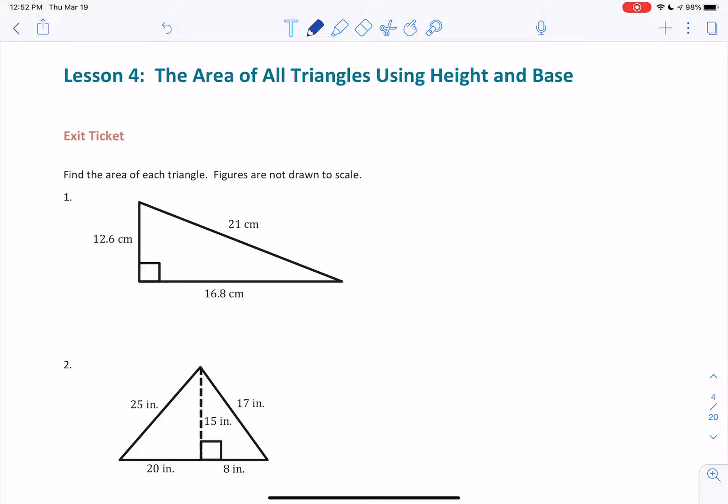Question number one, triangle, finding the area, simple. We're always going to be using this formula: Area equals base times height divided by 2. Just like a rectangle, cut in half. So the base of this triangle is 16.8. The height of this triangle is 12.6.